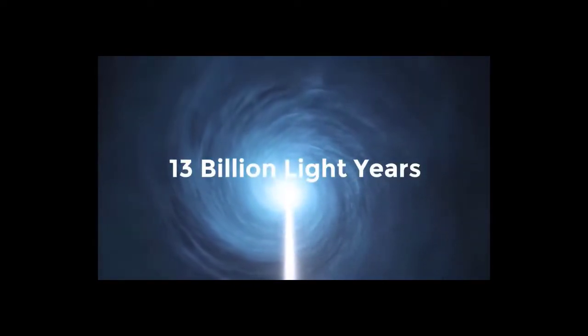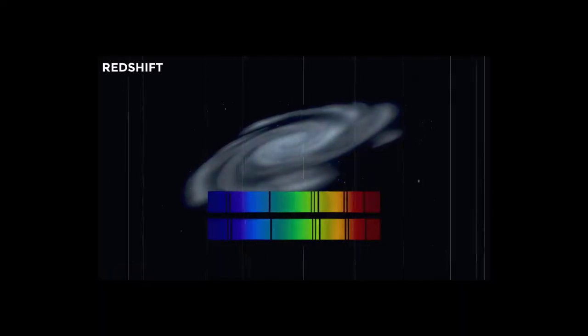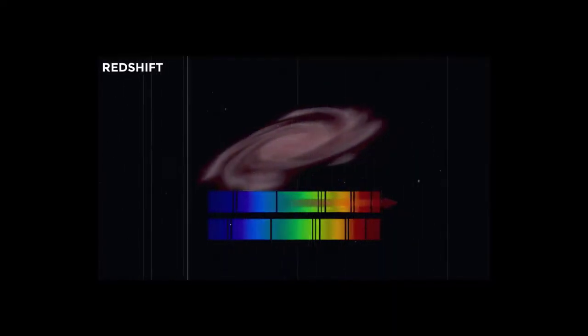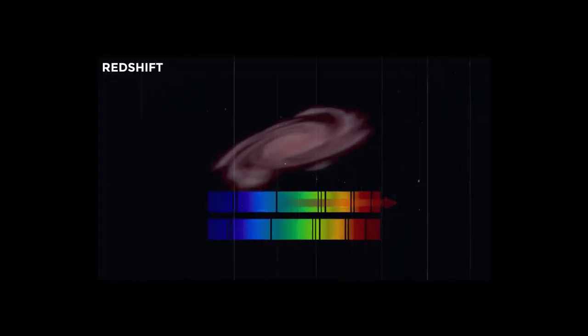Quasars and galaxies that formed just after the Big Bang are around 13 billion light-years away from us, on the other hand. Redshift, which gauges how quickly objects are moving farther away based on how stretched out their light waves are, is used to determine these.